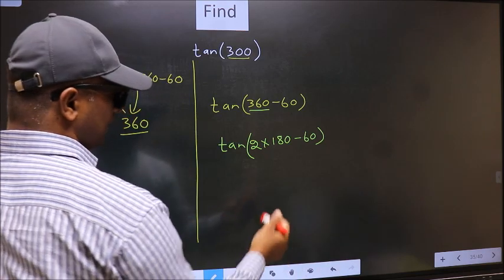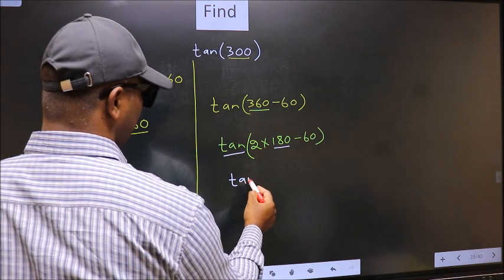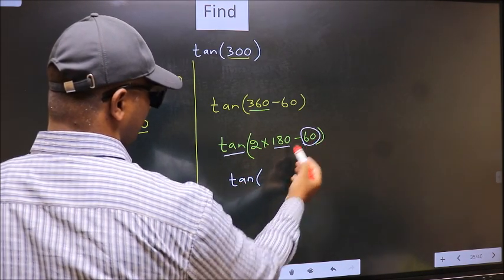Next, here we have 180, so tan is not going to change. It will remain tan, and inside we get this angle 60.